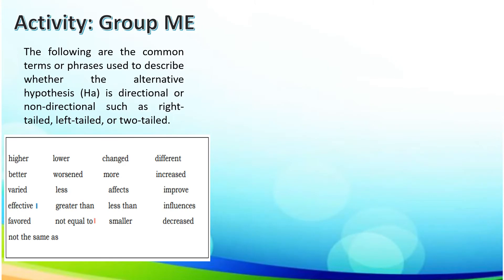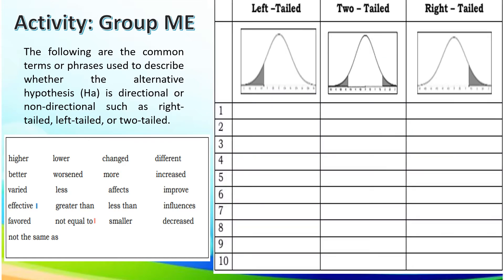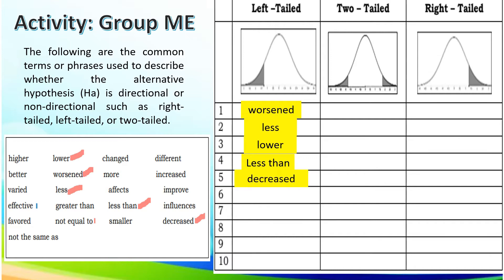To begin with, let's have the activity entitled GroupMe. The following are the common terms or phrases used to describe whether an alternative hypothesis is directional or non-directional, such as right-tailed, left-tailed, or two-tailed. Let us group them in a given table. Worsen, less, lower, less than, decreased, and smaller all belong to left-tailed.